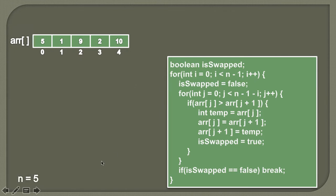The number of elements is five, with indices from zero to four. At the first step, we create a boolean variable called isSwapped. This boolean variable will keep track of the swapping in each iteration — whether a swap is done or not. If no swap is done, we know the array is already sorted and we simply break from the algorithm.